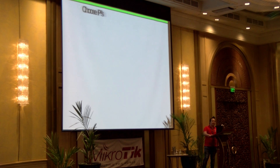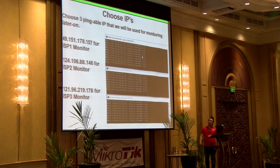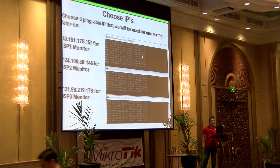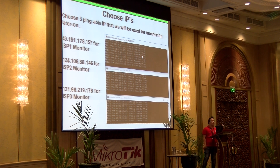So these are my three chosen IPs. I pinged three DNS — I am sure that they are DNS — and I assigned them for each of the ISPs to be the monitor. So 49 for ISP1, 124 for ISP2, and 121 for ISP3 monitor. Basically, they are all pingable. I chose DNS because they are always readily available and always pingable.